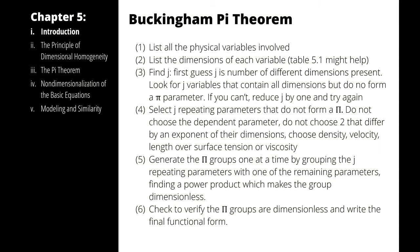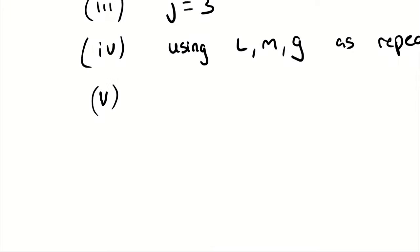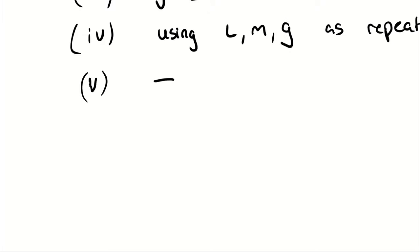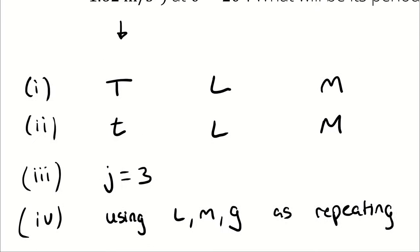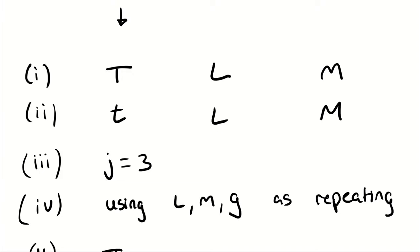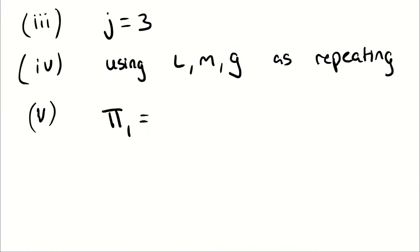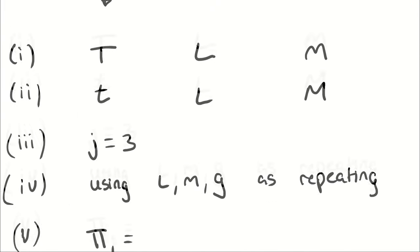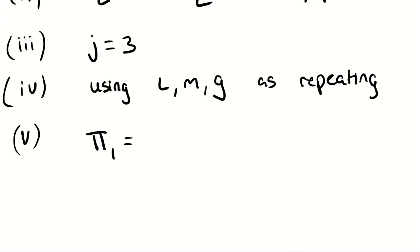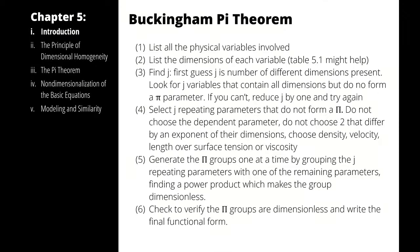Step five is to generate the pi groups one at a time. Since I have two non-repeating variables, I will have two pi groups — one for each. The first uses the period of oscillation, working left to right. I write it as: period of oscillation times L^a times M^b times g^c, selecting exponents that make pi group one dimensionless.